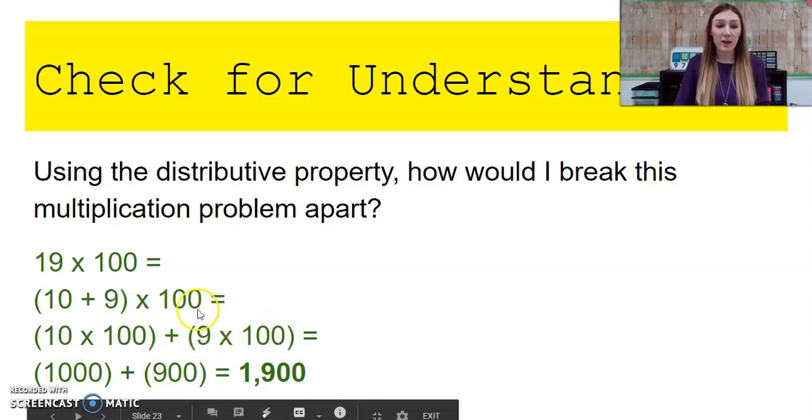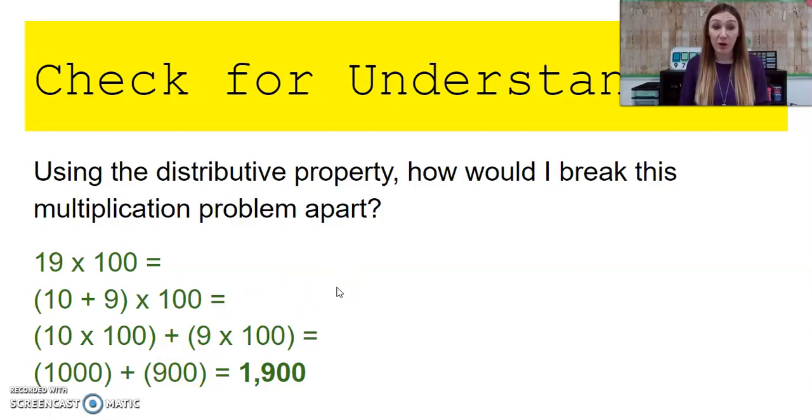9 times 1 is 9. I have 1, 2 zeros. So I should have 1, 2 zeros in my product. When I add those partial products together, I get a total product of 1,900.